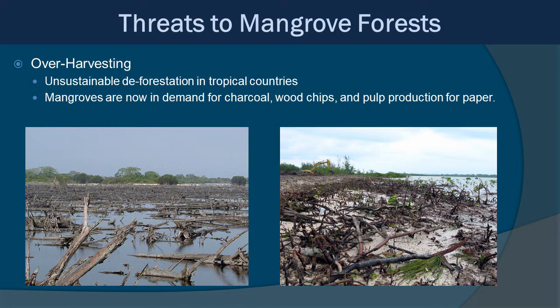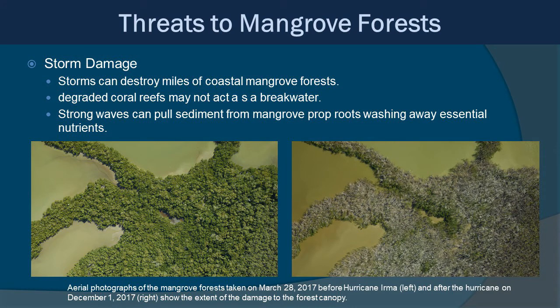Overharvesting of mangroves, essentially deforestation, is very much problematic and happens a lot in tropical countries. Mangroves are in demand for charcoal, wood chips, and pulp for paper production. Storm damage can also be a problem in coastal regions — storms can destroy miles of coastal mangrove forest and degrade coral reefs, which then allows more waves to come in and affect the mangroves. Strong waves can pull sediments from mangrove prop roots, washing them away along with essential nutrients. Aerial photographs of mangrove forests taken before and after Hurricane Irma in Florida show just how devastating the damage can be, though the wood structure remains, showing how well mangroves help retain sediments and fight storm surge.